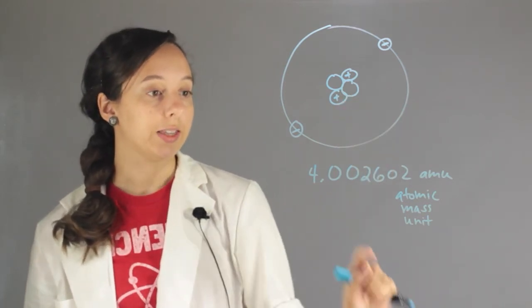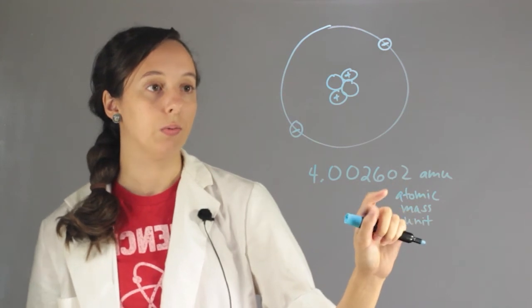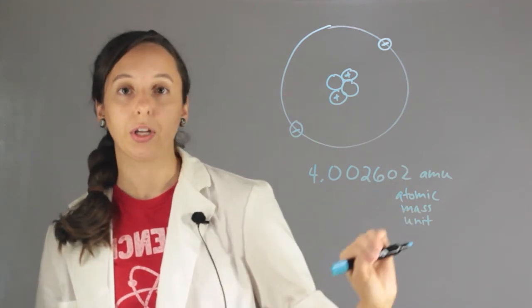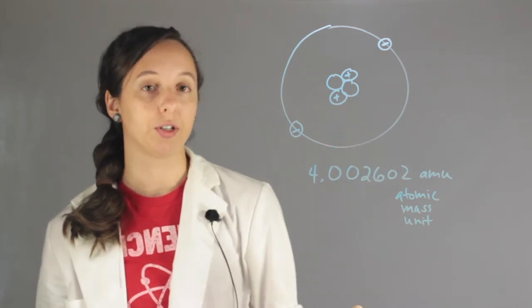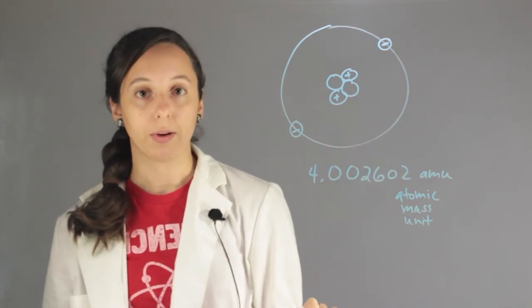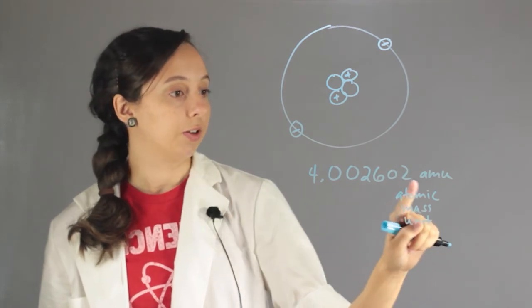And so if you take the average, even though only one in a million or a lot less than that of these helium atoms are going to have three or four neutrons, some of them still do. And when you average all of their weights, this is the eventual weight.